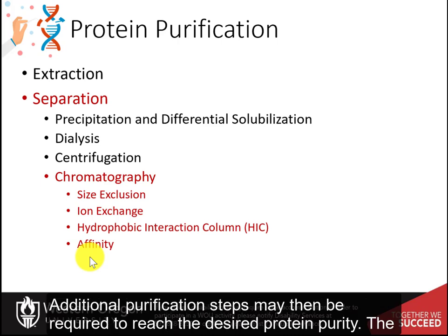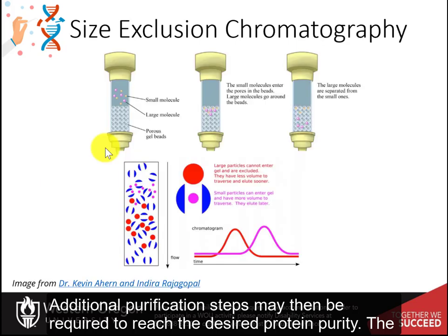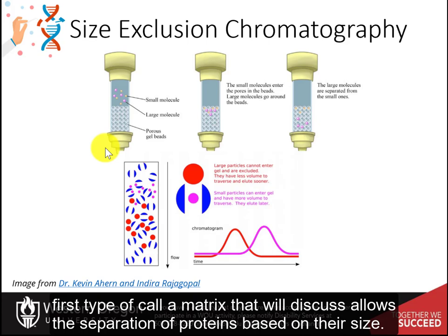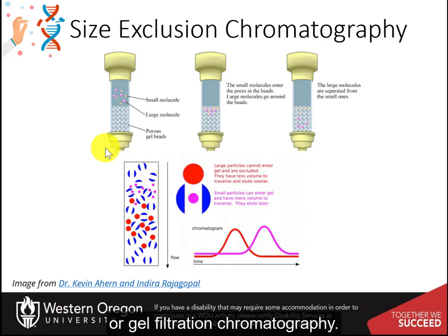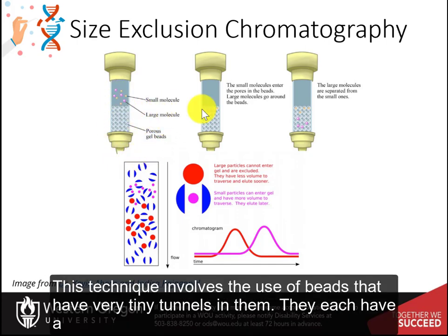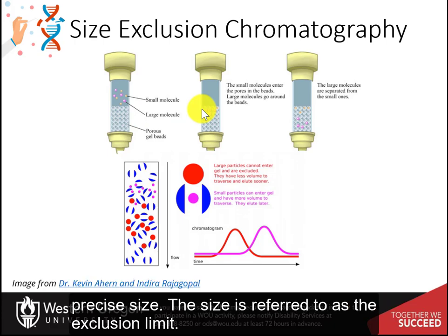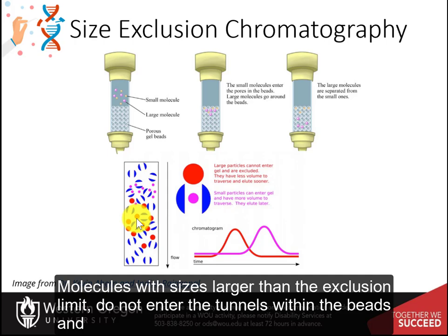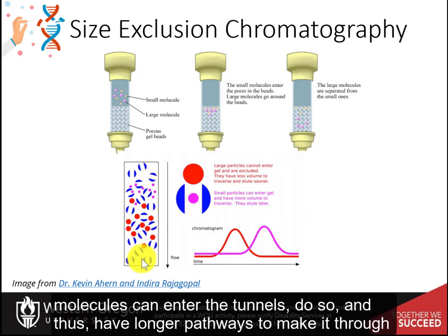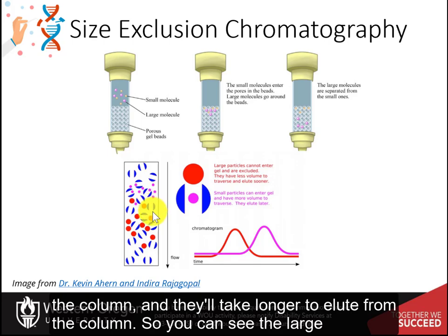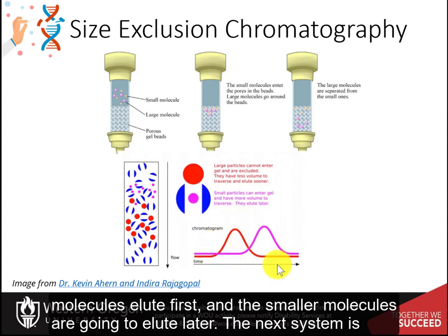There are four main types of column chromatography to become familiar with. The first type separates proteins based on their size and is known as size exclusion chromatography, or gel filtration chromatography. This technique uses beads with very tiny tunnels of a precise size called the exclusion limit. Molecules larger than the exclusion limit do not enter the tunnels and pass through the column quickly, while smaller molecules enter the tunnels and take longer pathways, eluting later. So large molecules elute first and smaller molecules elute later.